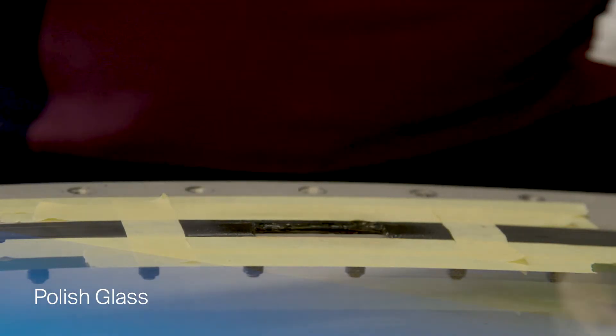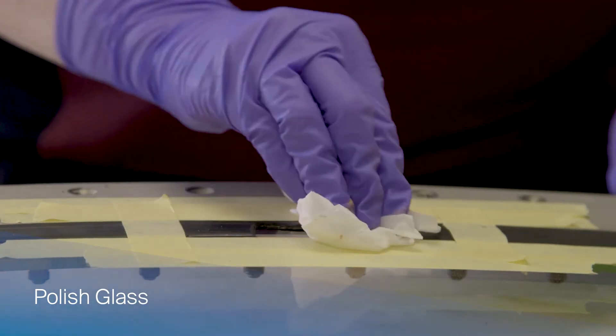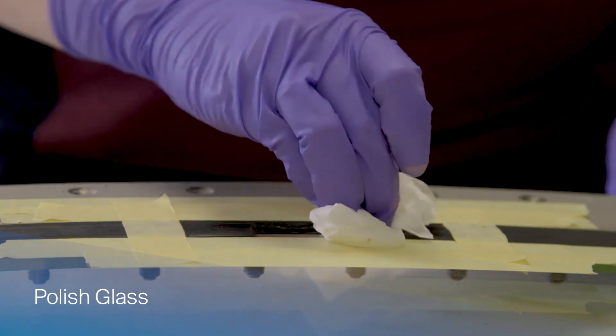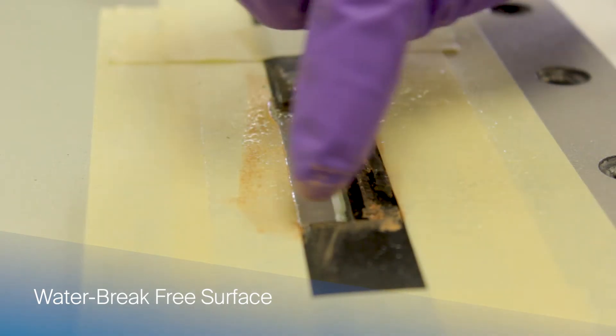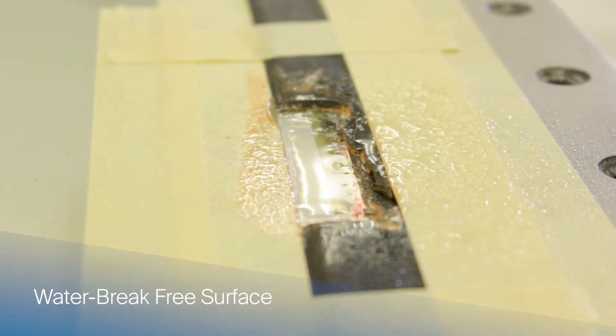Spray the polished surface to test for a water break-free surface. Continue to polish until the water completely sheets over the surface. Achieving a water break-free surface is critical to ensure adhesion of the new sealant to the outer glass surface.